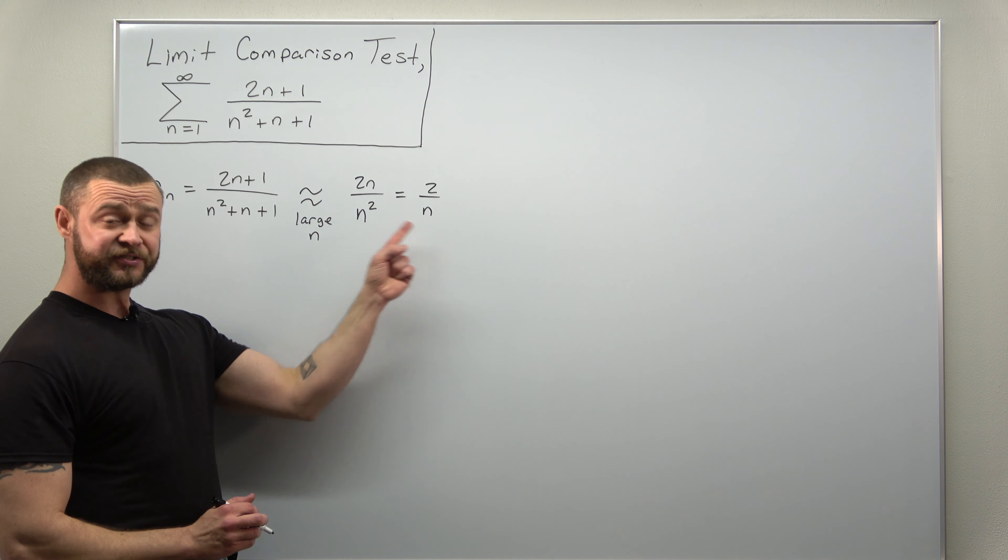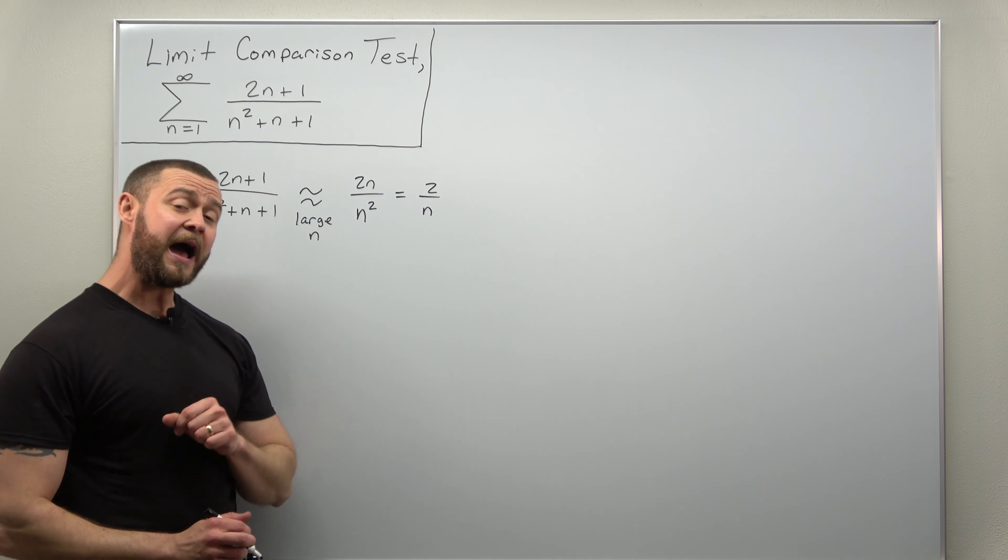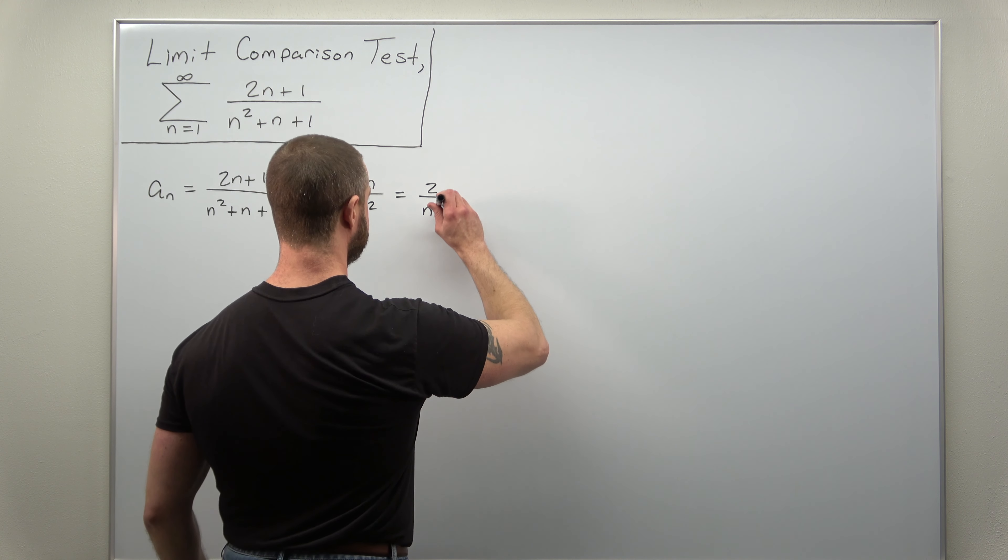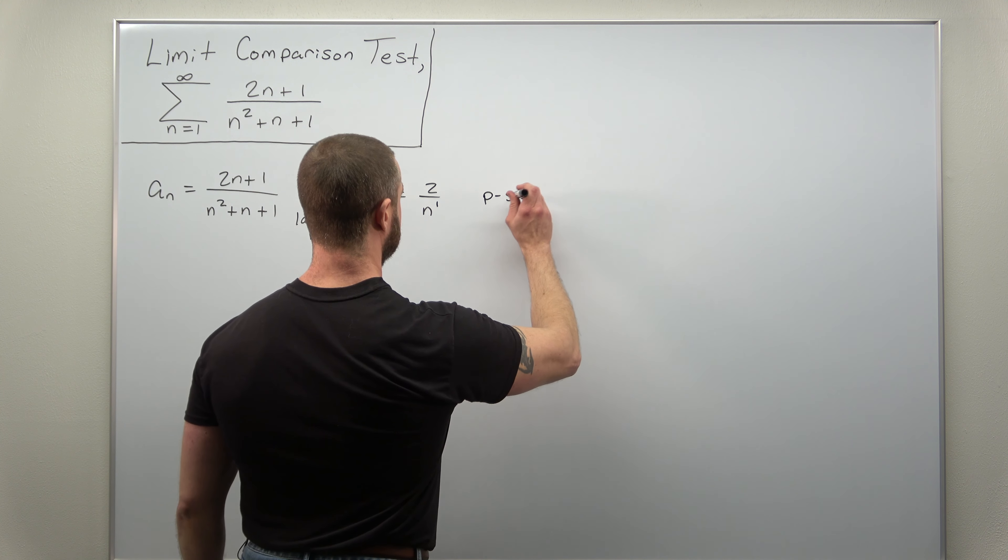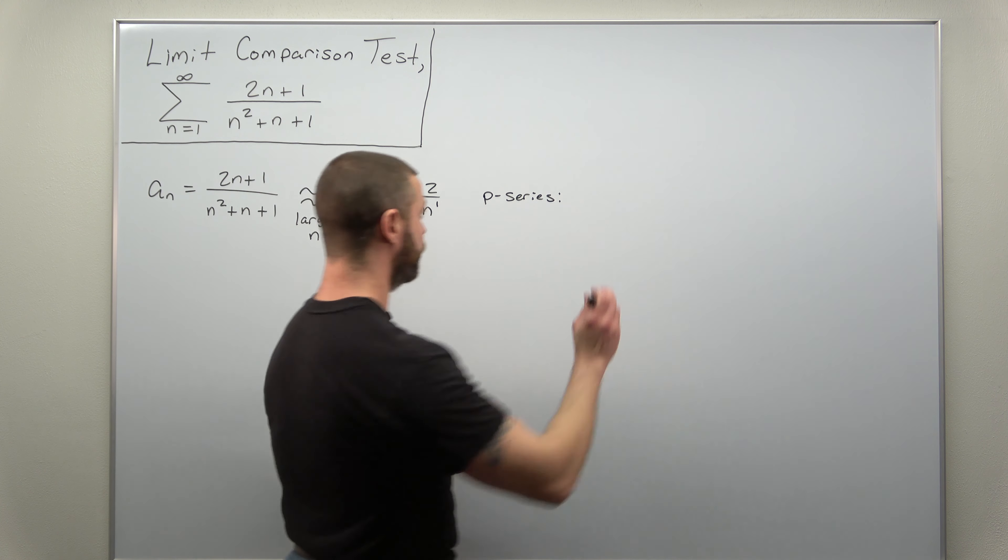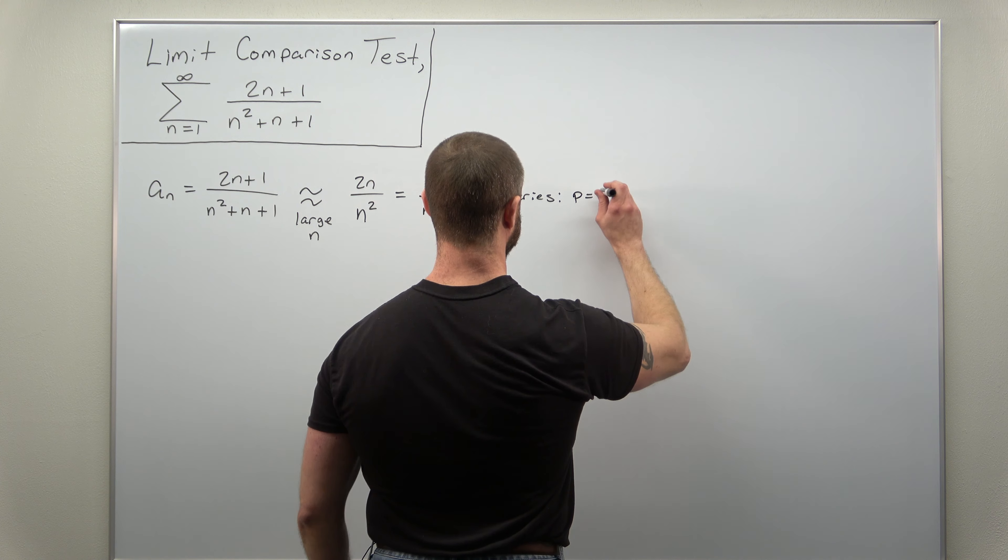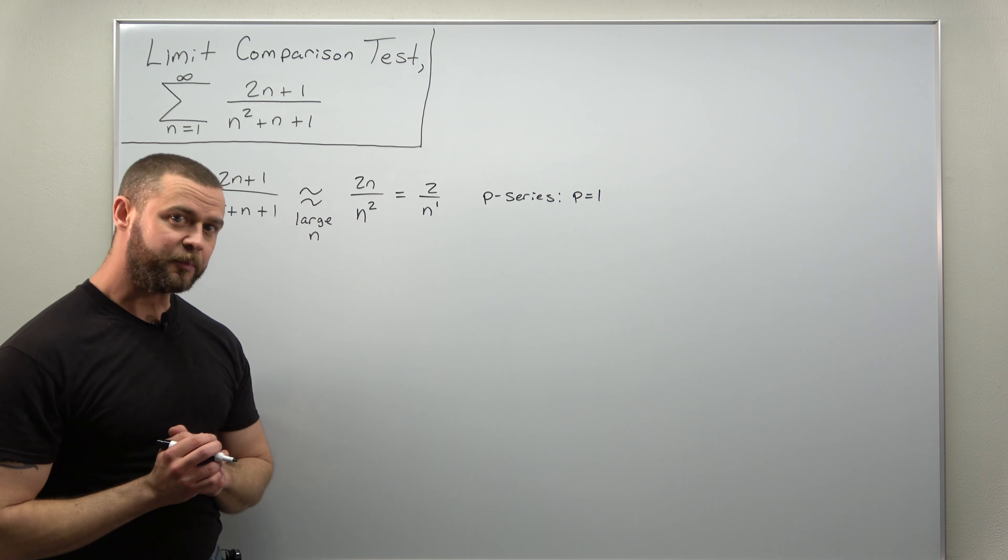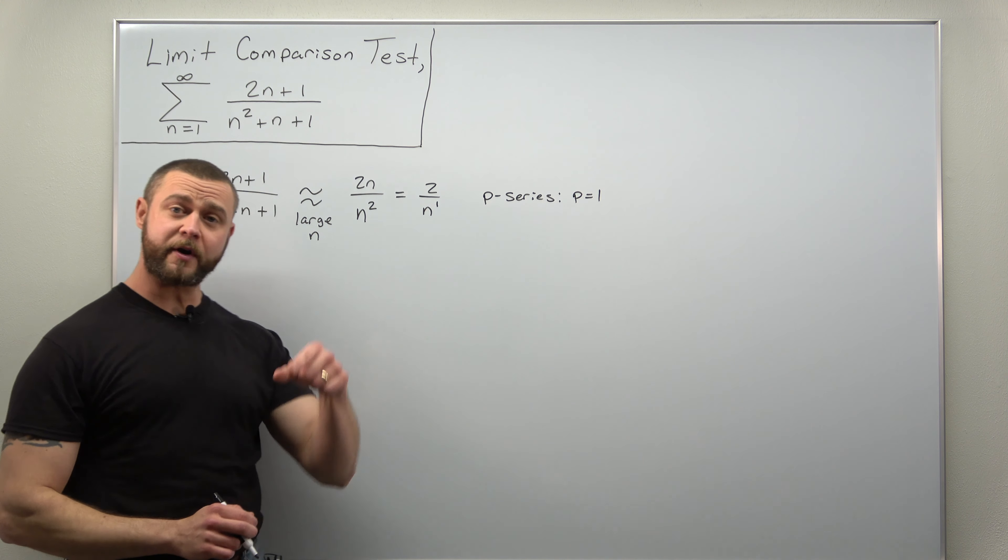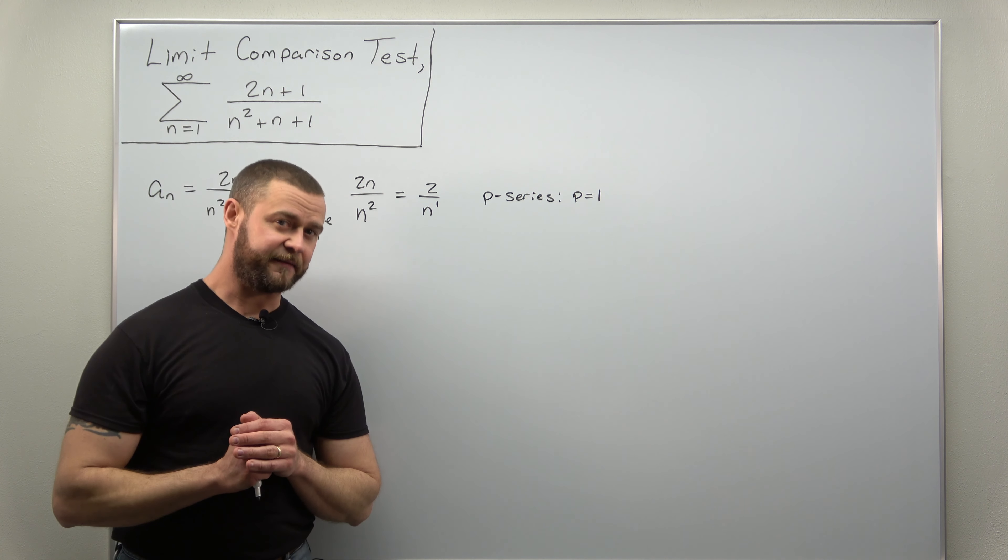If you take a look at this, this is n to a power in the denominator. Let me just write the exponent there, that's 1. This is a p-series where p is 1. And why that's important is an infinite series with that term 2 over n, that is divergent.